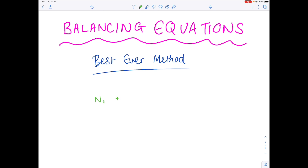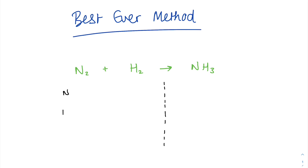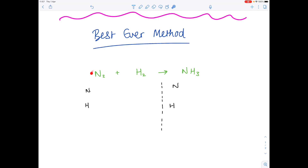Starting with our first equation: nitrogen plus hydrogen forms ammonia. Your first step is to draw a dotted line under that arrow, then list the elements on either side of the equation. There are only two in this situation. Do it again on the right hand side, making sure that your nitrogens and your hydrogens line up.